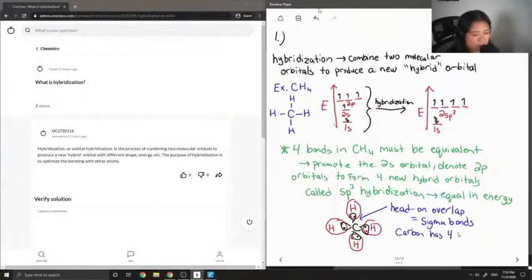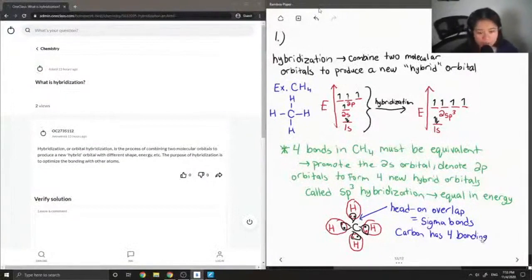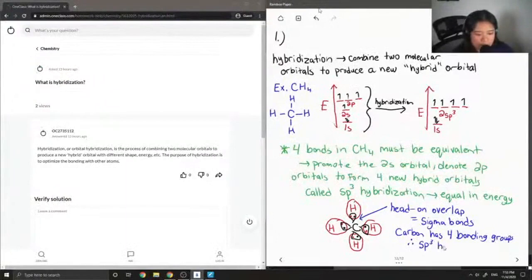And since the carbon has four bonding groups, so bonding groups can either be a bond to another atom or it can be a lone pair. In this case it has four bonding groups each to four hydrogens. So therefore we would say that this carbon is sp3 hybridized.